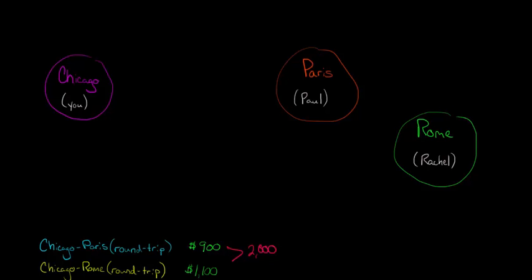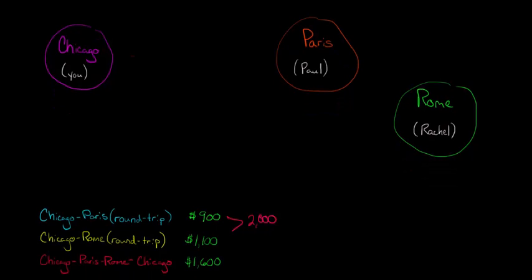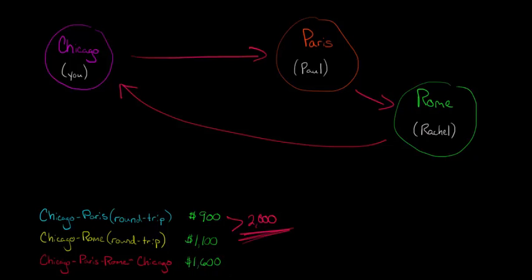But you could also, to save your friends some money, you could fly from Chicago to Paris, then from Paris to Rome, and then back to Chicago, and let's say the cost of that would be $1,600. So you'd be saving your friends $400, because instead of $2,000, it'd be $1,600.